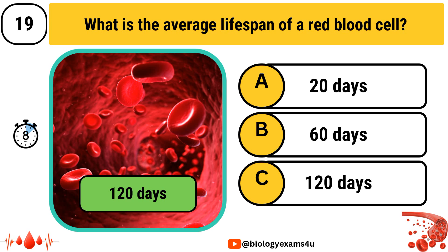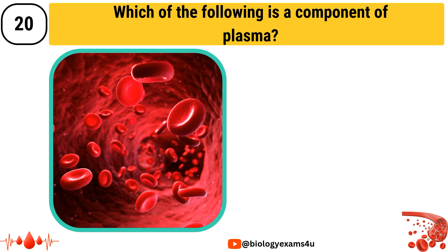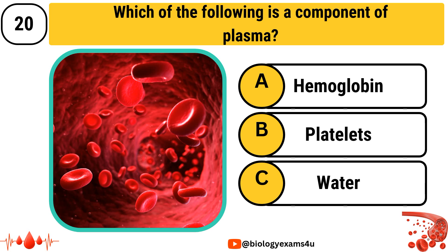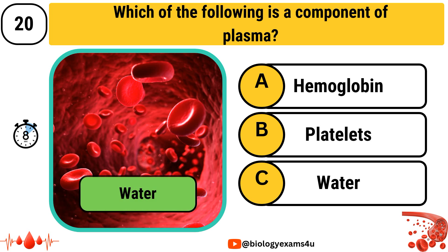The final question: Which of the following is a component of plasma? The options are Option A: Hemoglobin, Option B: Platelets, Option C: Water. The answer is Water.